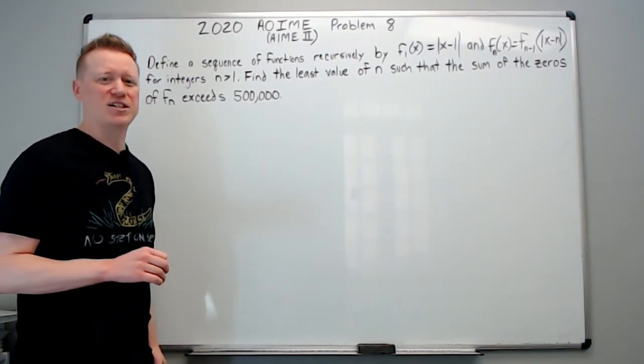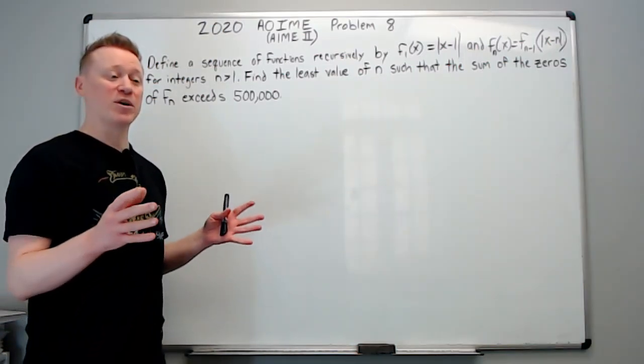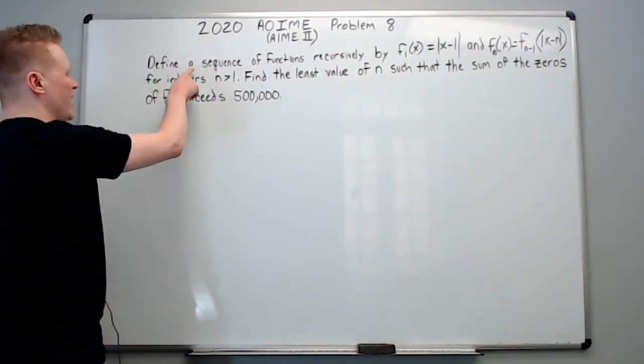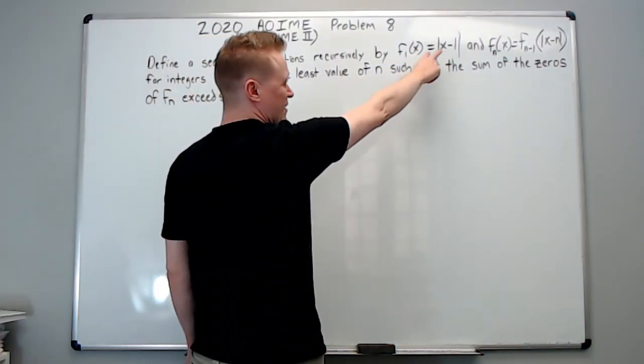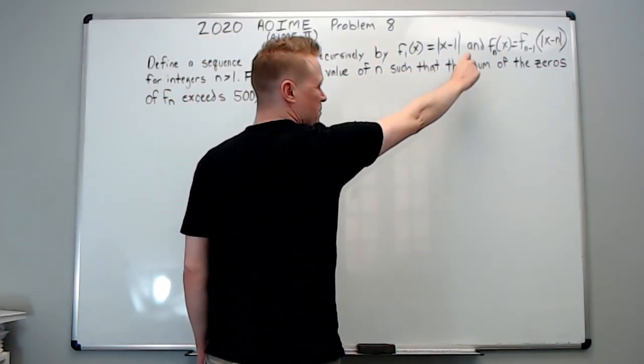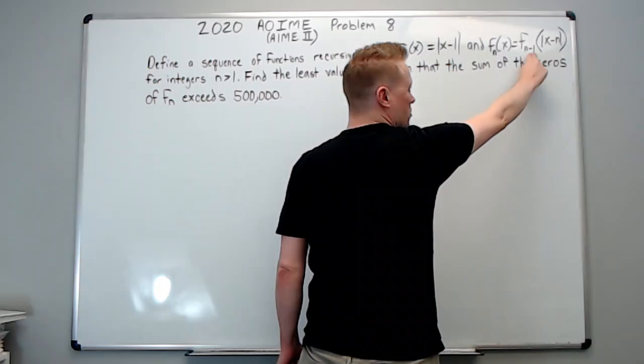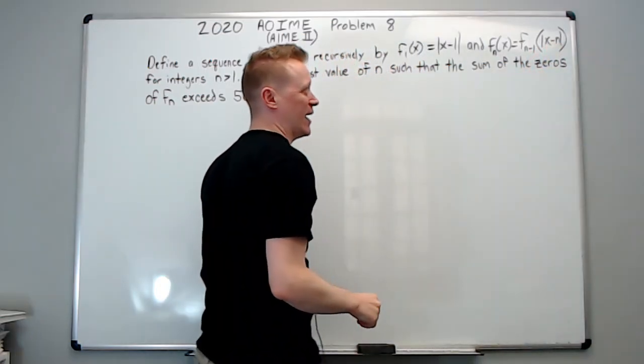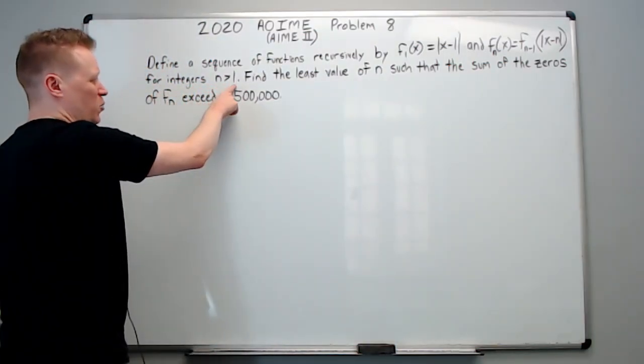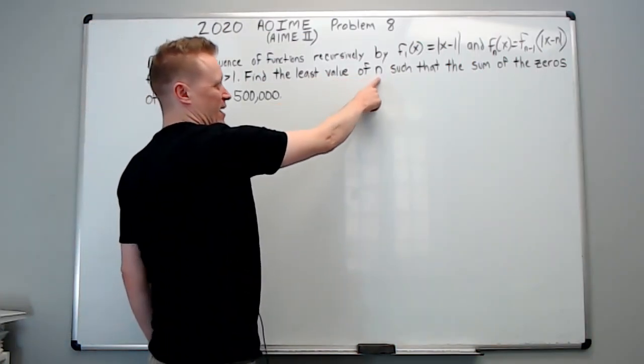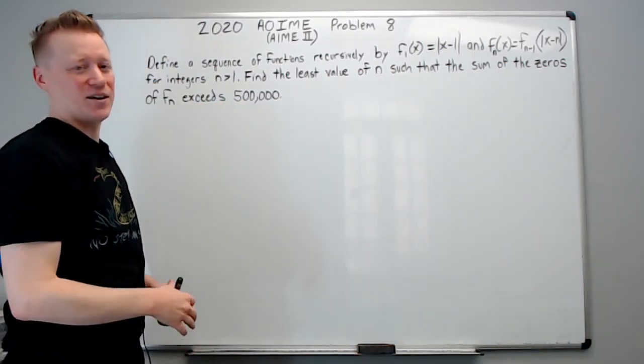Probably don't skip around too much, I want you to hear these because we're going to go over some principles of problem solving that apply to all problems, and we're going to illustrate it with this problem. Define a sequence of functions recursively by f_1(x) equals the absolute value of x minus 1 and f_n(x) equals f_{n-1} of the absolute value of x minus n. What does that mean? We'll get to it. For integers n greater than 1, find the least value of n such that the sum of the zeros of f_n exceeds 500,000.